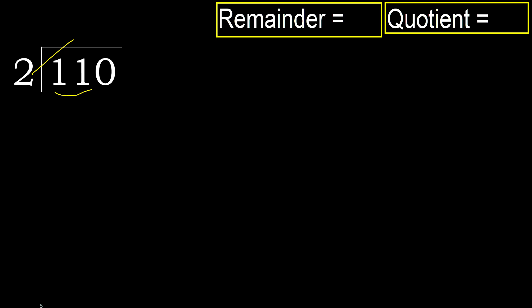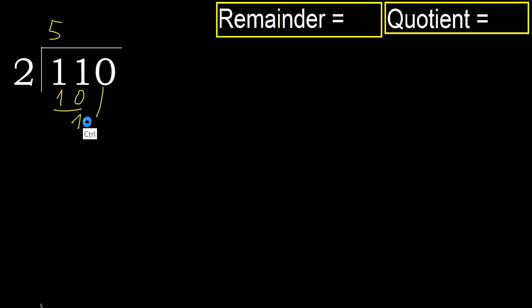2 multiplied by 6 is 12. 12 is greater. Multiply by 5 is 10. 10 is not greater. 11 minus 10 is 1. Next.